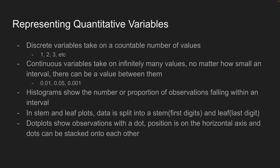How do you represent quantitative variables? There are two types. First are discrete variables, which take on a countable number of values — think 1, 2, 3. You can't have a fraction of it. Continuous variables take on infinitely many values no matter how small the interval between them — think 0.001, 0.005, 0.00001. For a continuous variable, think of time; there can always be a more precise measurement. For a discrete variable, think of how many books you have — you can only have 1, 2, 3, and so on.